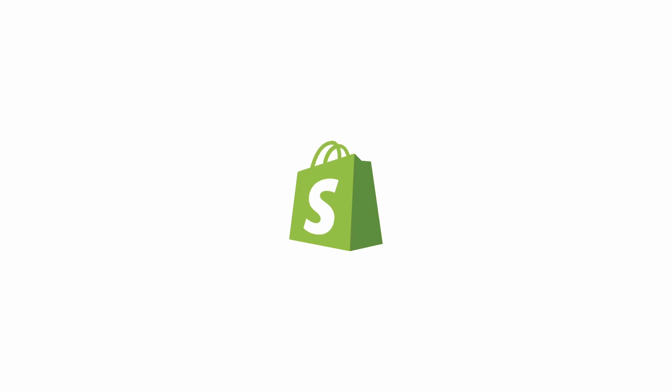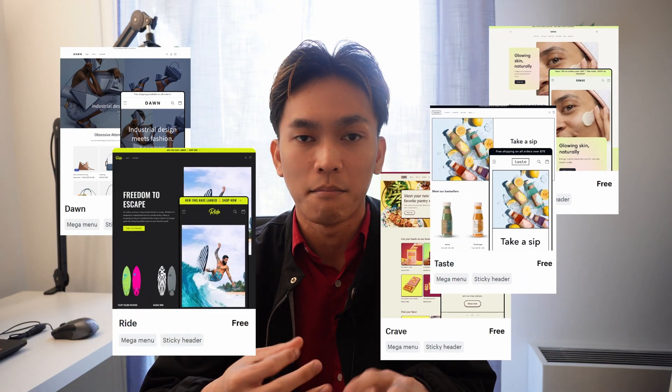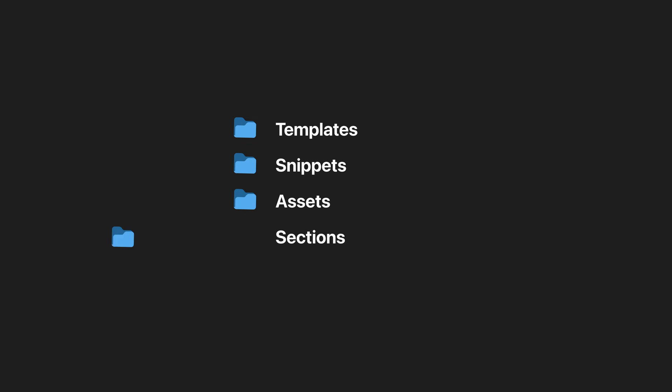Everybody has developed an e-commerce store before, so you know what a Shopify theme is. We do have Shopify themes like Dawn, Sense, and many more. These Shopify themes use an architecture that includes templates, snippets, assets, sections, and much more. One of the big problems with this architecture is that it is not scalable — you cannot have the freedom to create whatever template you can think of. That is where headless commerce comes in.